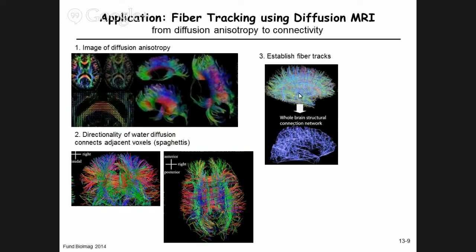Starting from a diffusion image, identifying ellipsoids in each voxel, and tracing connectivity with a seed point yields an image of the brain as a color-coded collection of fiber tracks. Work pioneered in Lausanne established which brain regions are connected to which, creating a whole-brain structural connection network — the connectome — showing which parts of the brain communicate through neuronal connections. This is the last new topic introduced this semester; the second half of today will summarize the imaging modalities covered.